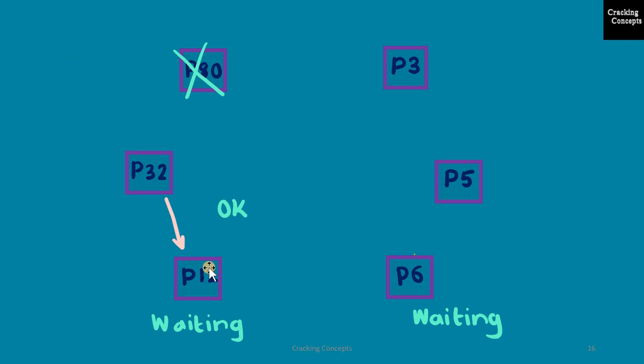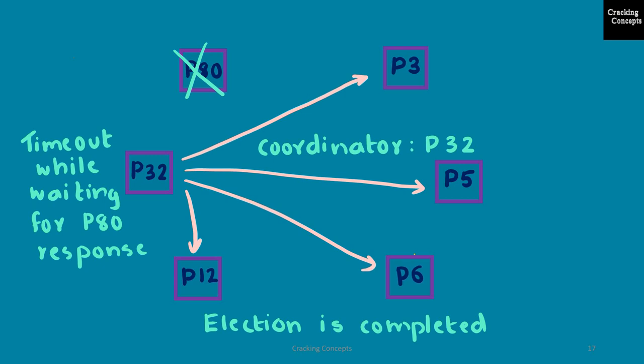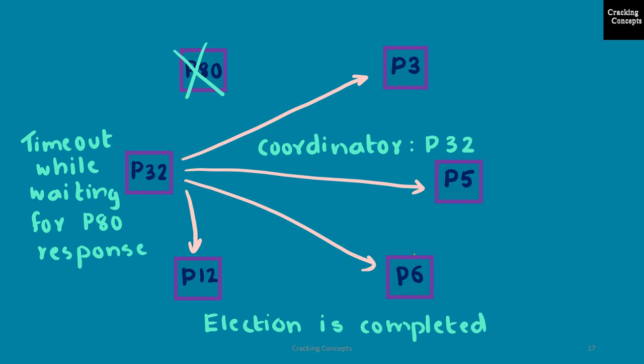P80 will not respond to P12 since it is down. P32 will reply to P12 with an OK message. Now both P12 and P6 are waiting for a reply from P80 and are in the waiting state. After the timeout, both will understand that P80 is down. Since P32 doesn't get any reply from P80, it will declare itself as the coordinator and send coordinator messages to all other processes. Thus the election is completed. That's all for now. Thank you for watching.